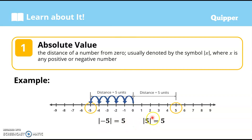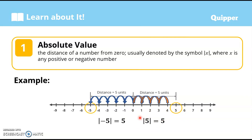Next, we have the absolute value of 5 — meaning, how far is 5 from zero? What is the distance of 5 from zero? Let's count: 1, 2, 3, 4, 5. This is also 5 units from zero. Therefore the absolute value of 5 is 5.